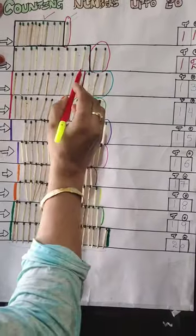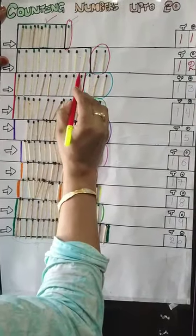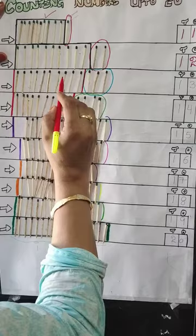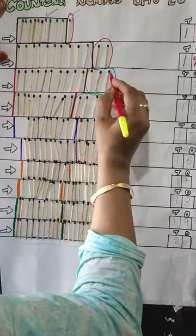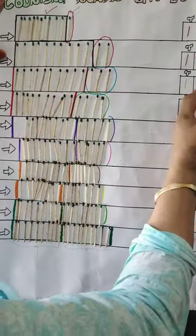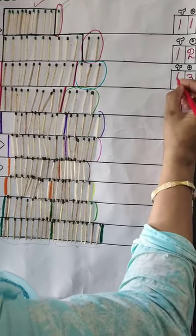Here also we have a group of 10 magic sticks representing 1 10 and 3 loose magic sticks representing 3 1s. Number 13.